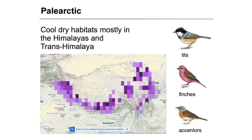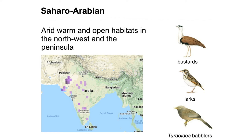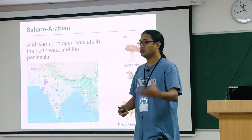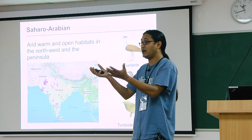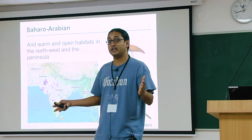Saharo-Arabian species tend to occupy arid, warm, and more open habitats. In dry grassland, you see species like Bustards, Larks, and Turdoides babblers — the Common Babbler and the Large Grey Babbler — which originate from the Saharo-Arabian biogeographic realm, coming in from the West. When India split from Madagascar and was moving up, there were no birds — birds had not evolved yet. India split from Madagascar 130 million years ago; there were dinosaurs but no birds. So all the birds in the Indian subcontinent have come from elsewhere.